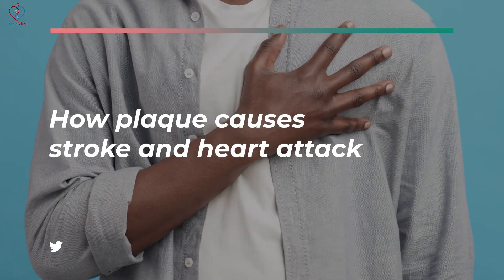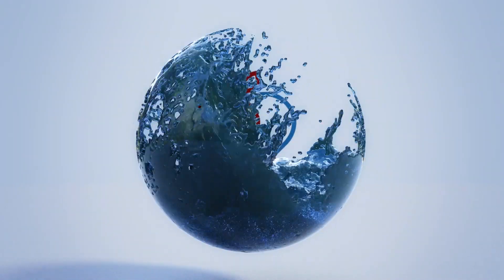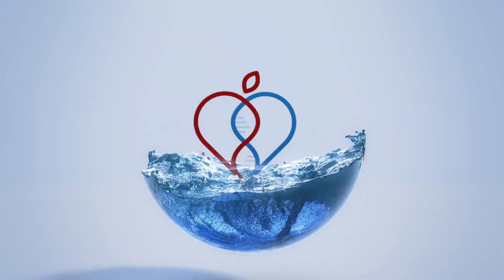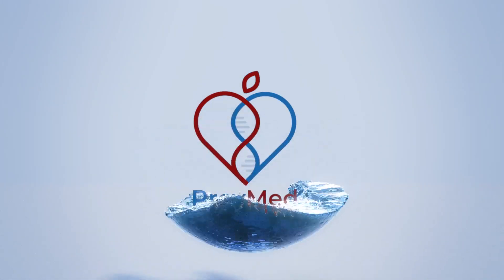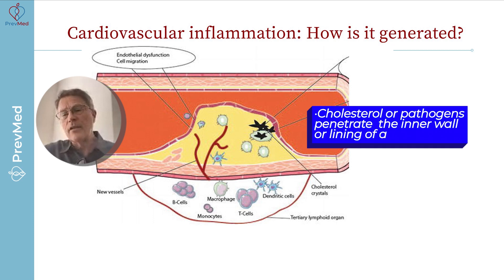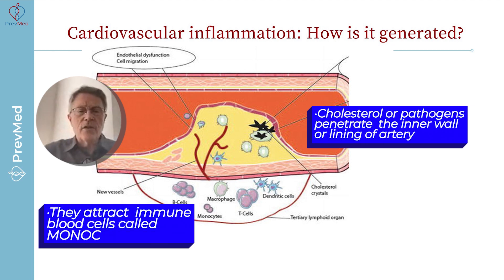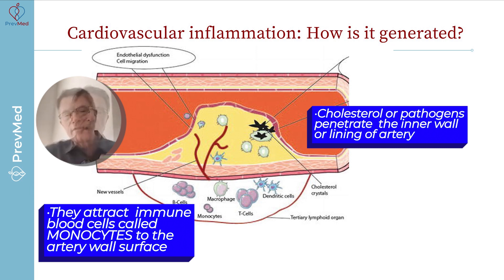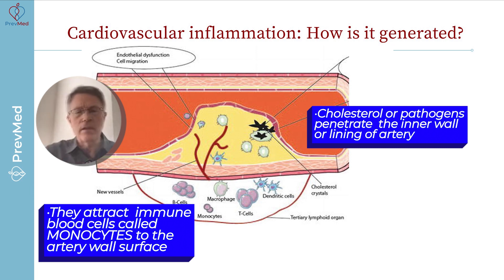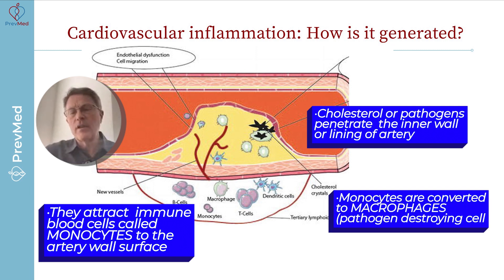Now let's get a little bit deeper in terms of what's going on there. Cholesterol or pathogens penetrate this inner wall or lining. That then starts to attract immune cells — different types of immune cells. Leukocytes, which we won't talk about too much today, but monocytes is another type. Monocytes, or immune cells, get converted into things we call macrophages.